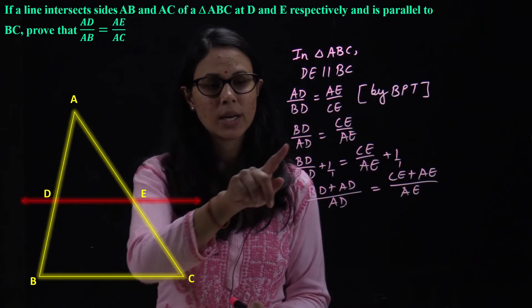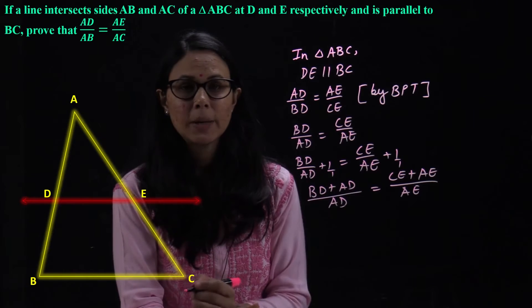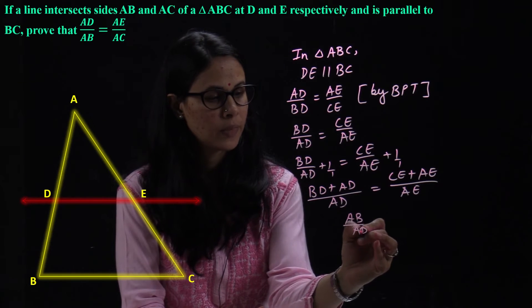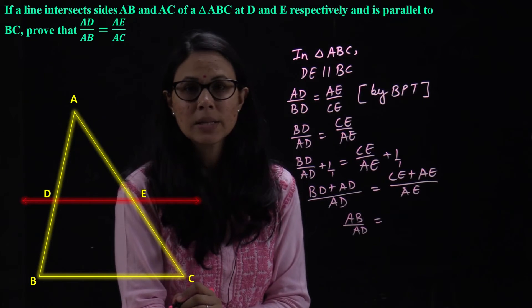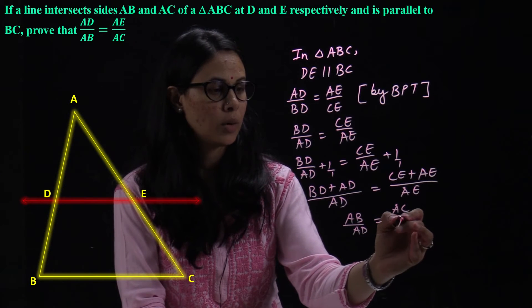So, what terms we need to do is in the numerator. Now, here we have to see. BD plus AD is equal to AB upon AD is equal to CE plus AE is equal to AC upon AE.